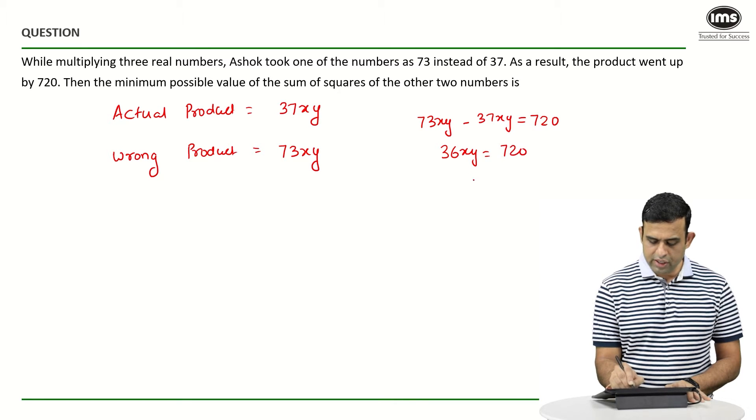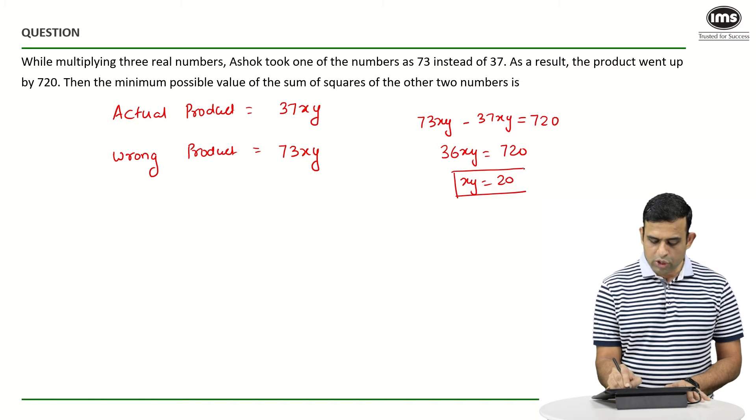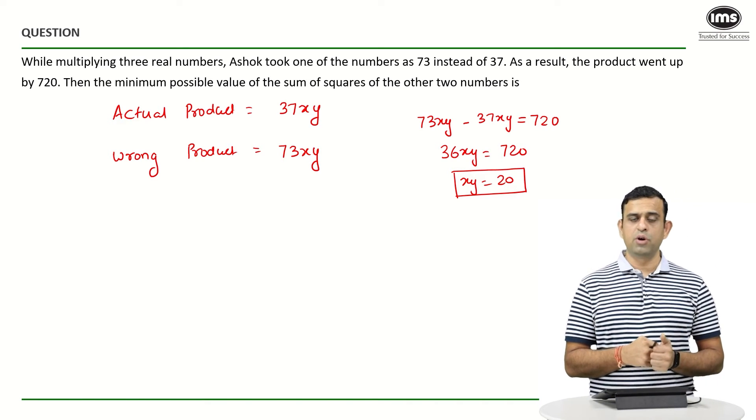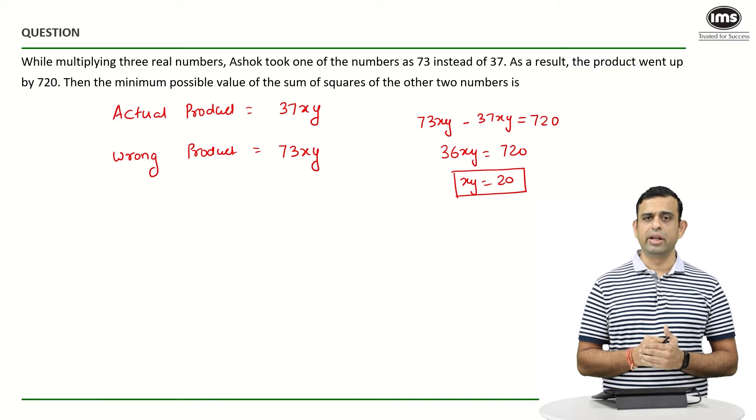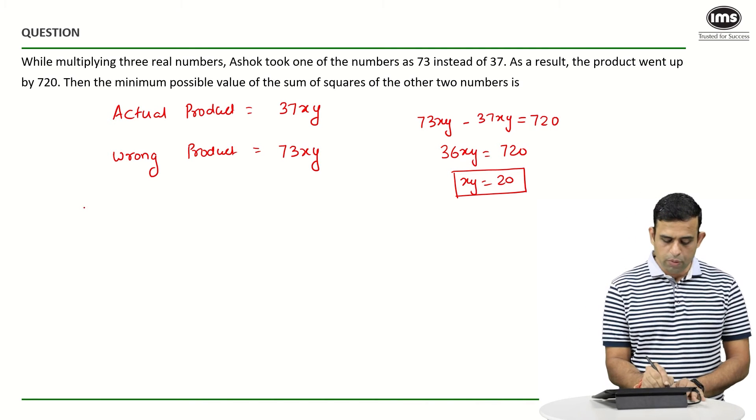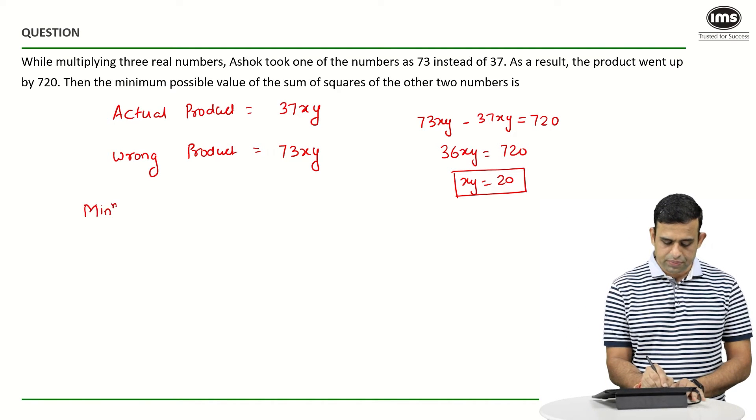x into y equals to 20. So I know the product of the other two numbers happen to be 20 in this particular case, and my objective is to minimize sum of the square of other two numbers.